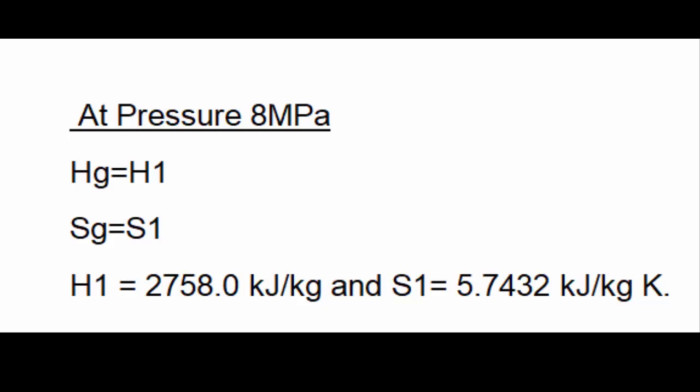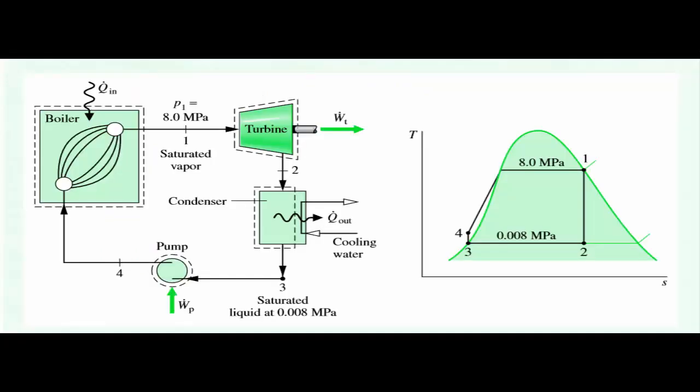At stage 2 the pressure is 0.008 megapascal, so first we calculate the entropy at that point. We again go to the table A-2 and see the entropy values at Sg and Sf. As you can see in the layout diagram, it is an isentropic process. There is no change in entropy from stage 1 to stage 2, so S1 will be equal to S2. To calculate the enthalpy at stage 2, we first have to calculate the quality of the mixture at that stage.